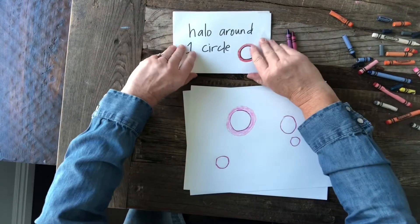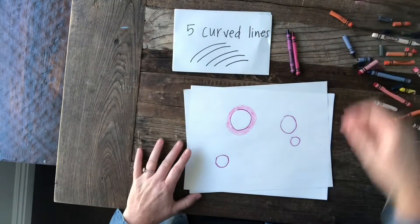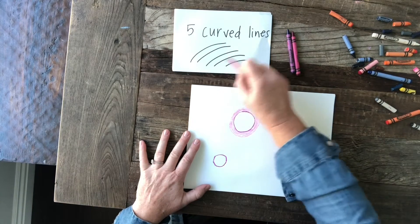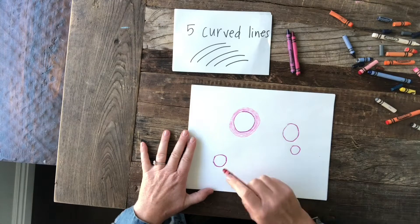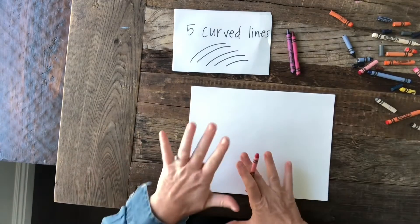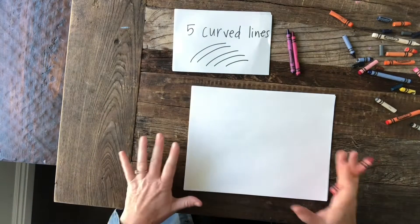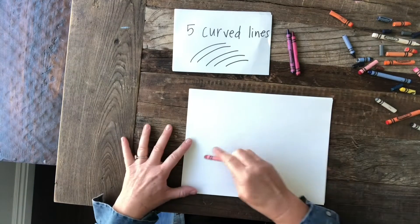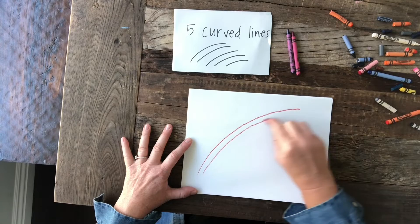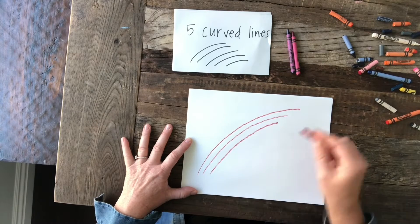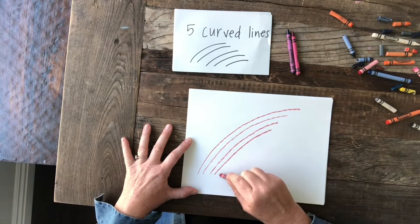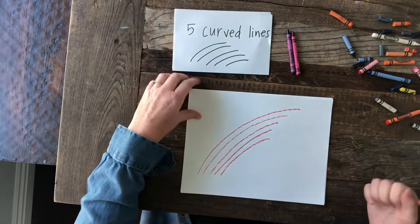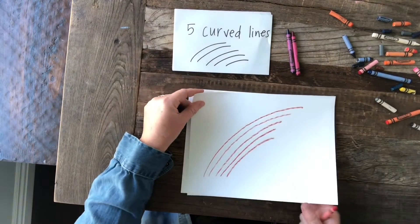Next step is five curved lines. Pick a color and make them going in the same direction — that's how Kandinsky did his. It's okay if your shapes are overlapping each other; that's actually good. We want that overlapping, so don't feel like everything has to be separate. One, two, three, four, five. If you did yours smaller or in a different direction, that's fine. I'm hoping your picture will look very different than mine when it's all done.